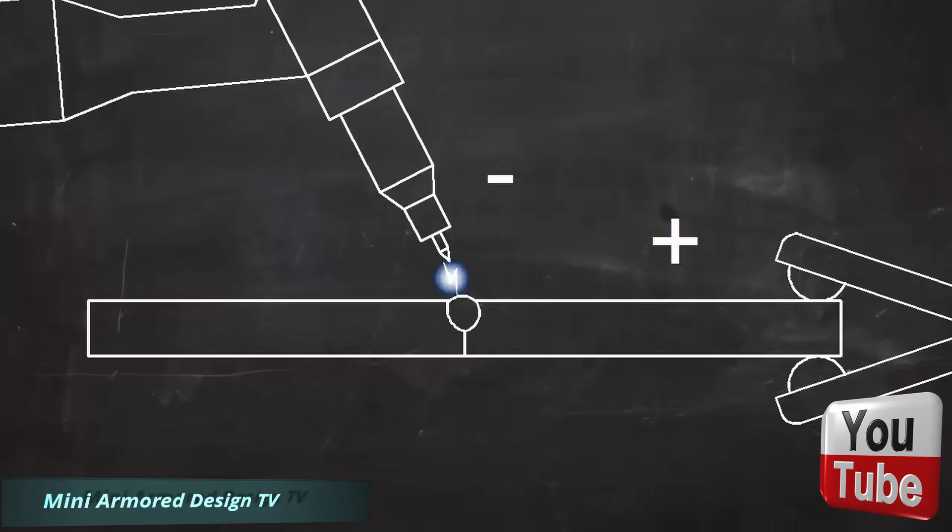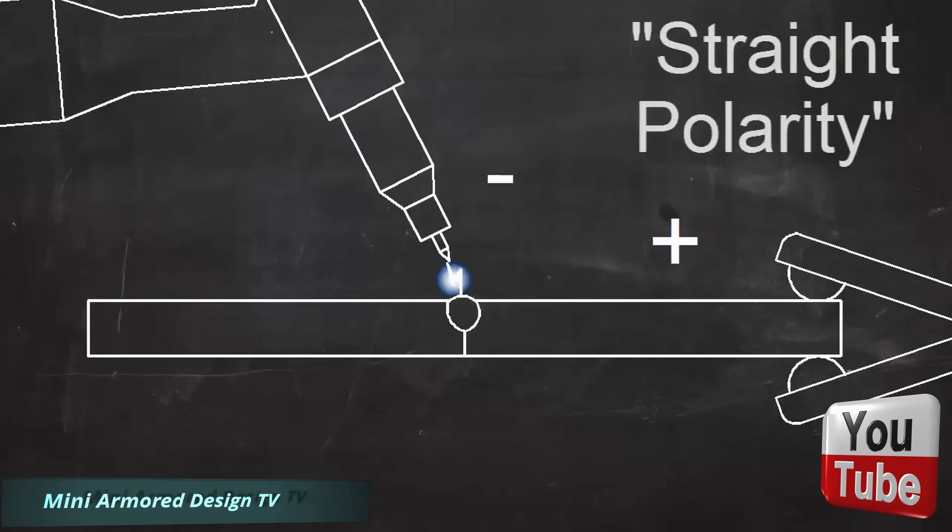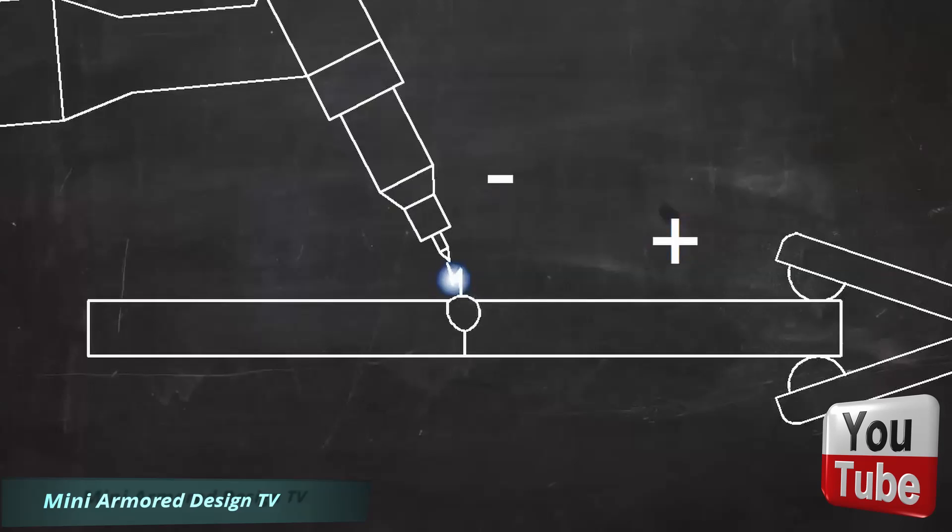In DC TIG welding, the electrode is usually negative and the workpiece is positive. The term DC EN is used for this, indicating that the current is DC and the electrode is negative. This is also called straight polarity, but DC EN is a more descriptive term. DC EN puts most of the heat on the workpiece, and it's the most common setup.